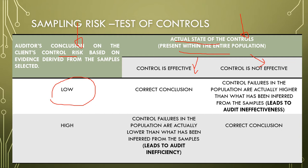If the actual state is that the control is effective, then we have arrived at the correct conclusion. But if the control is not effective, then we have inferred wrongly. If we conclude that control risk is high, but the control failures in the population are actually lower than inferred — meaning the actual control failures are actually low — this will lead to what we call audit inefficiency.